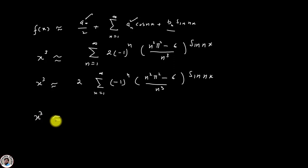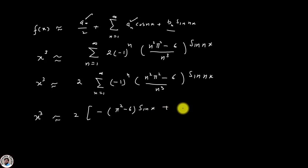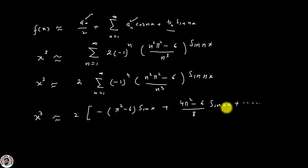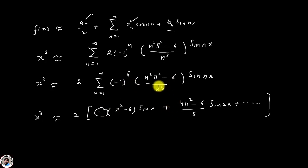Expanding the series: for n=1 we get 2(-1)(π² - 6) sin(x) = -2(π² - 6) sin(x); for n=2 we get 2(+1)(4π² - 6)/8 · sin(2x) = (4π² - 6)/4 · sin(2x); and so on. This is the required Fourier expansion of the given function x³.